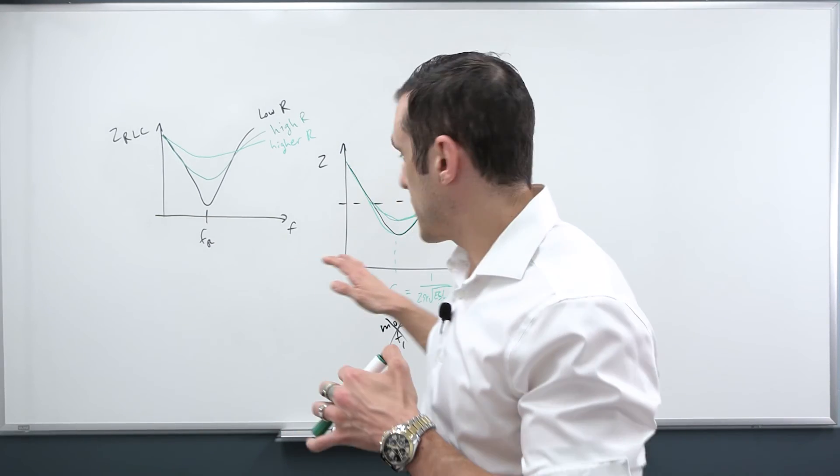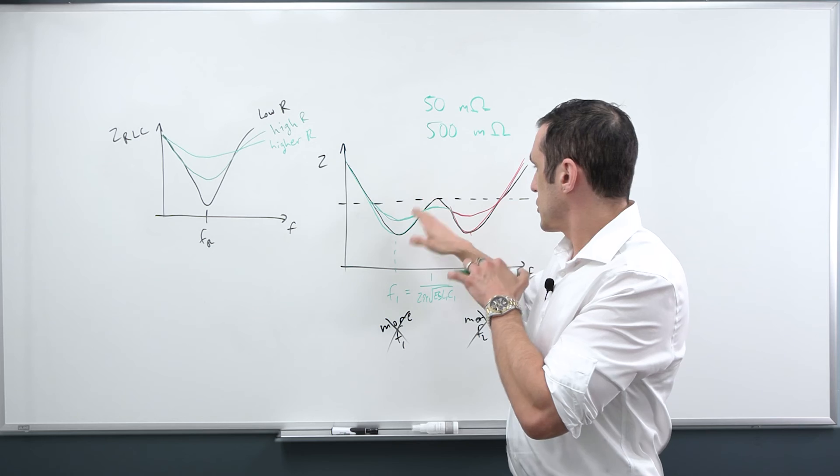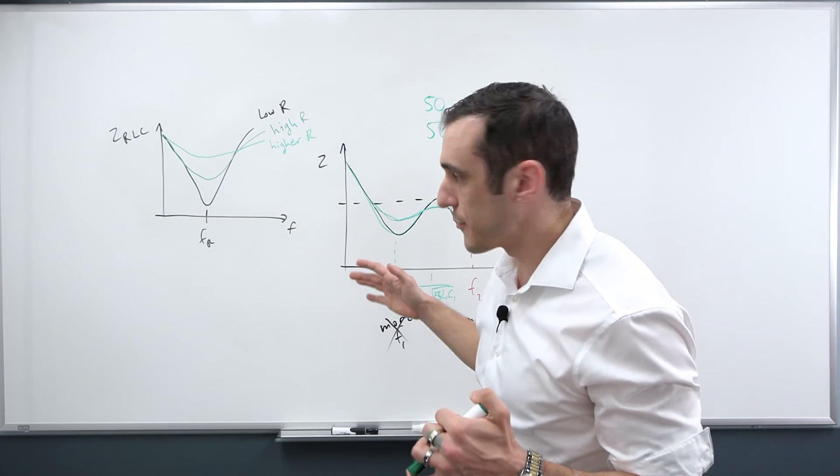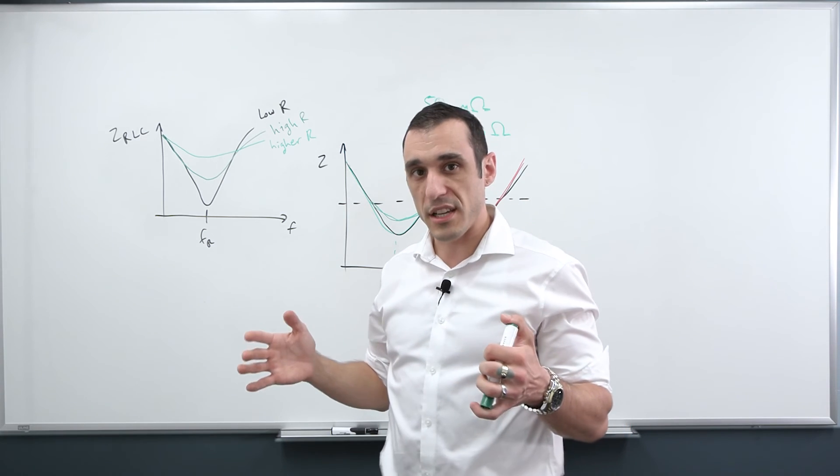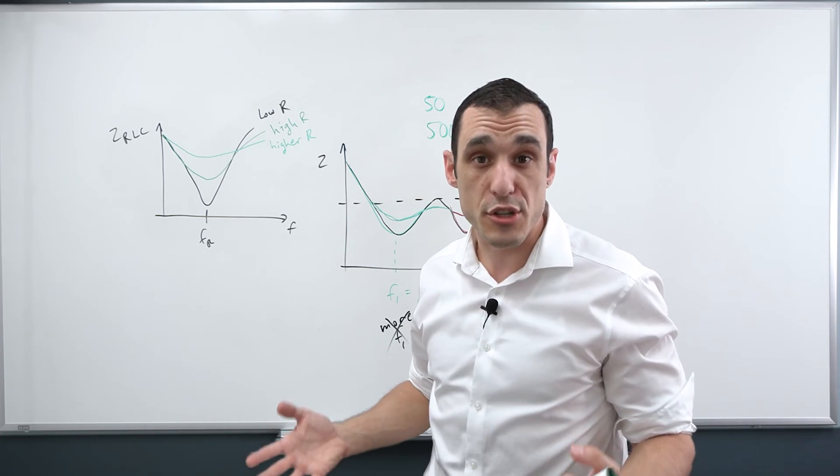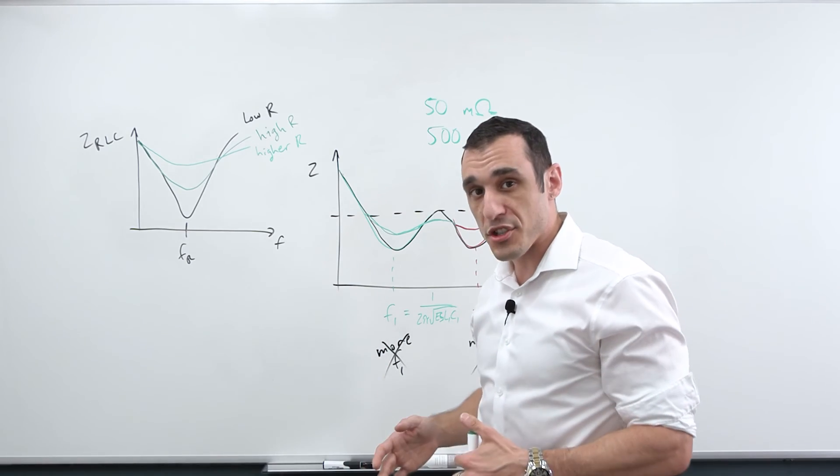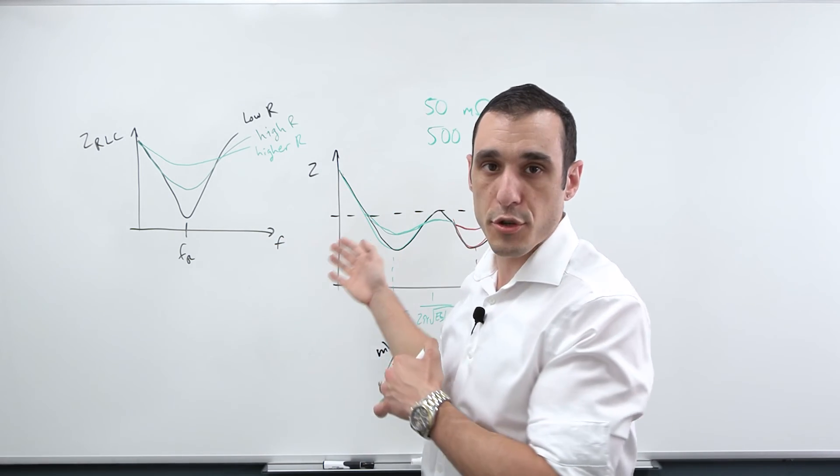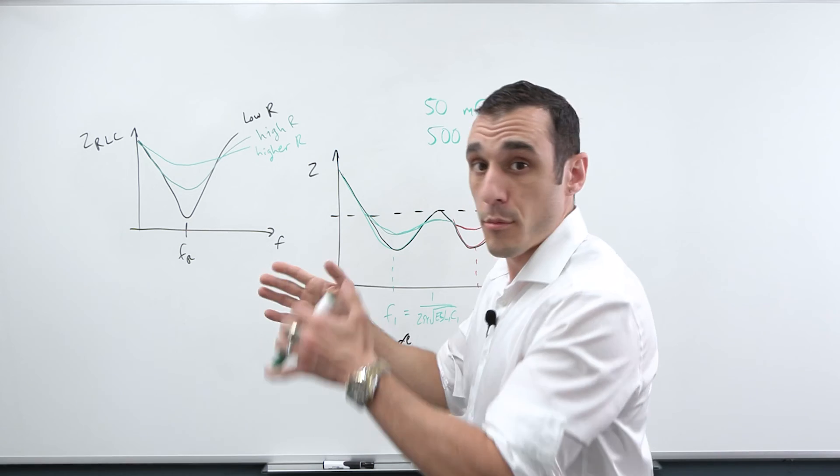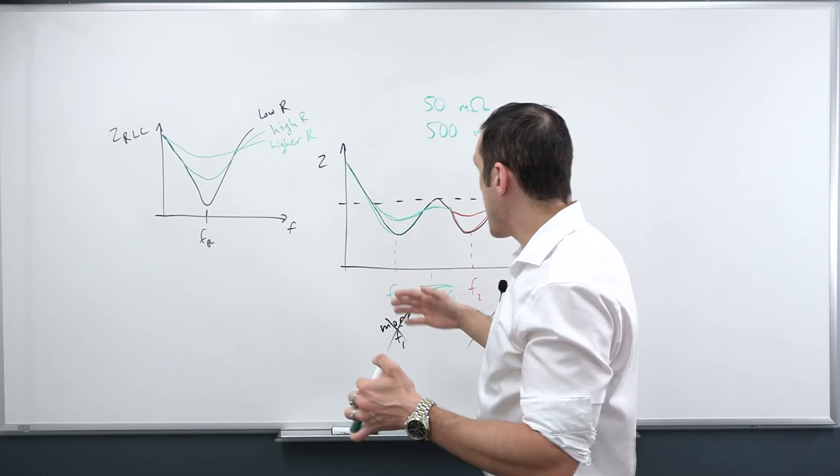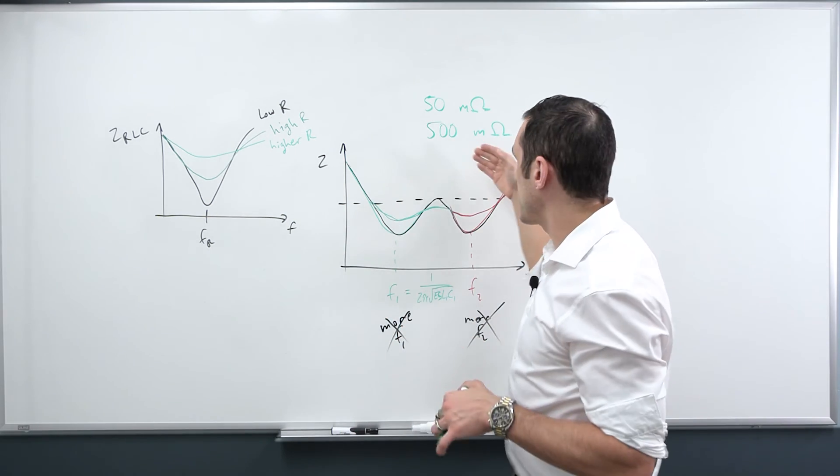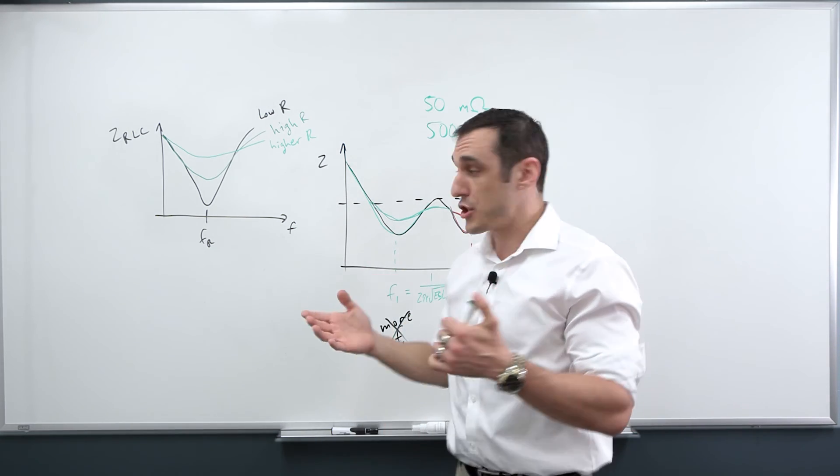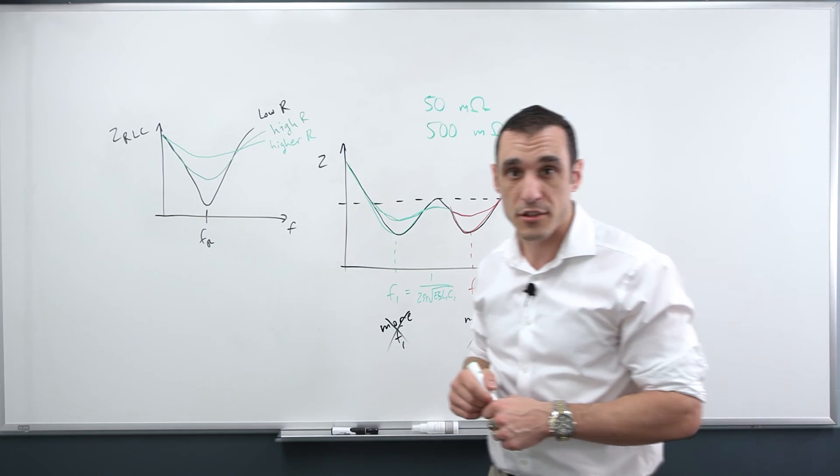So if you want to do some simulations that actually show you these types of curves for a group of capacitors in your power delivery network, you don't need a really complex simulation tool. You can actually do it with SPICE. Now there are some limitations when you use SPICE, but what you can do is you can use equivalent circuit models for your capacitors, put your capacitors all in parallel, and then look at what happens as you change the different values of ESR or ESL or C, and you can see how the shape of the impedance curve starts to change.